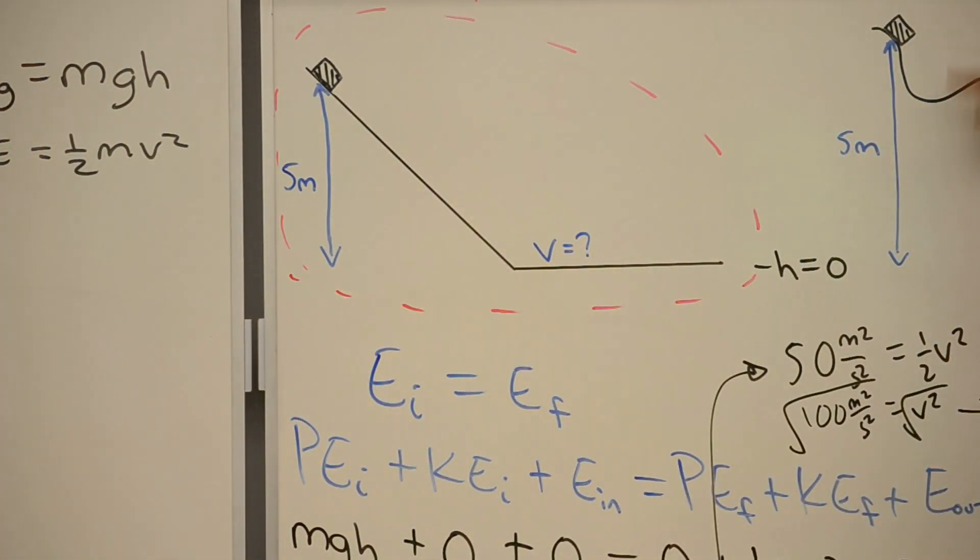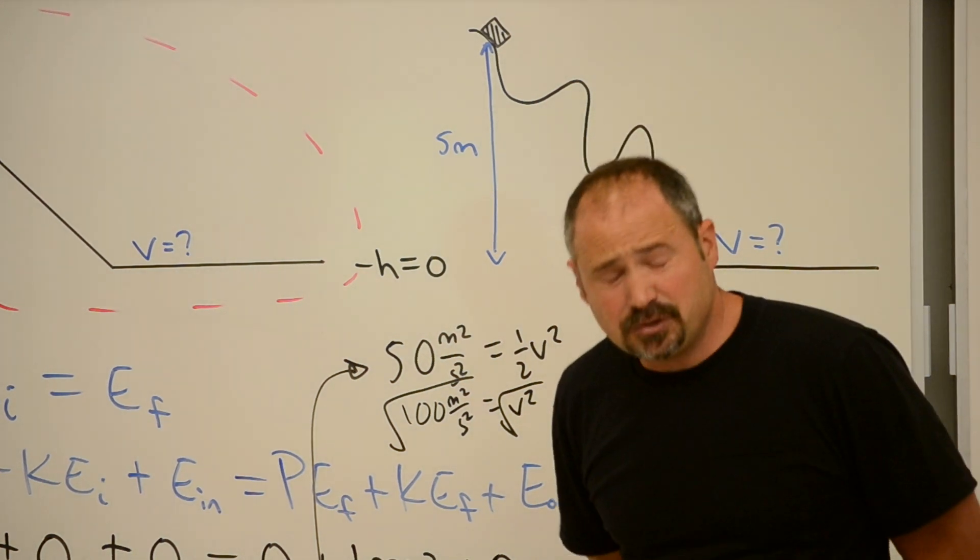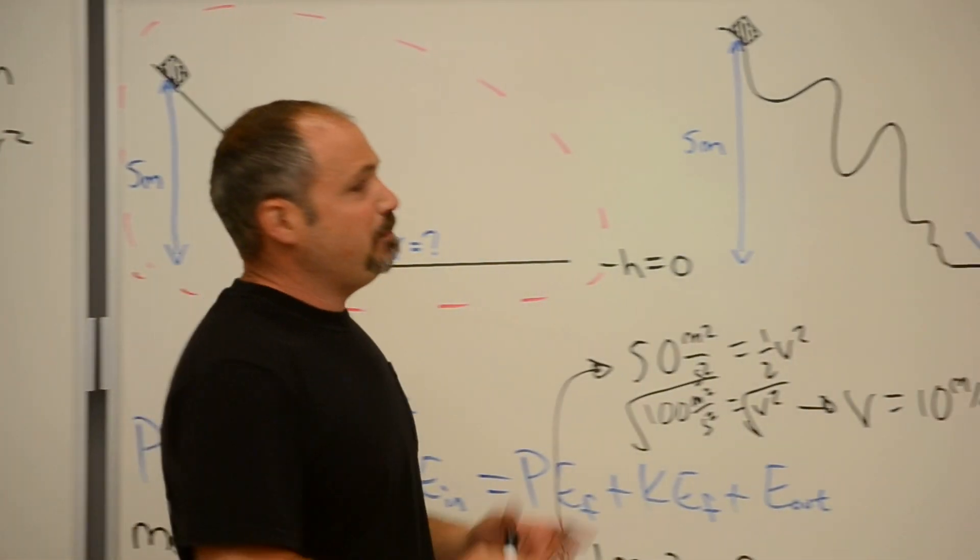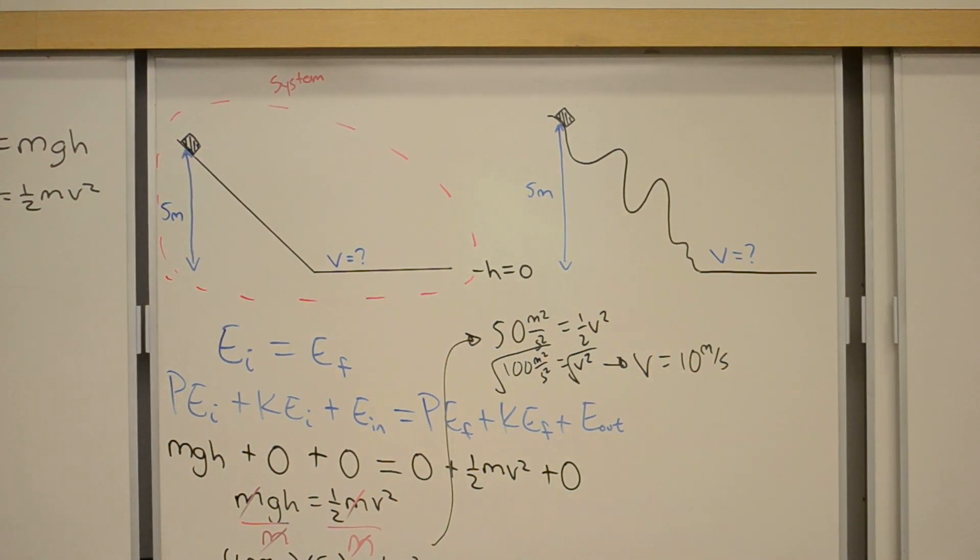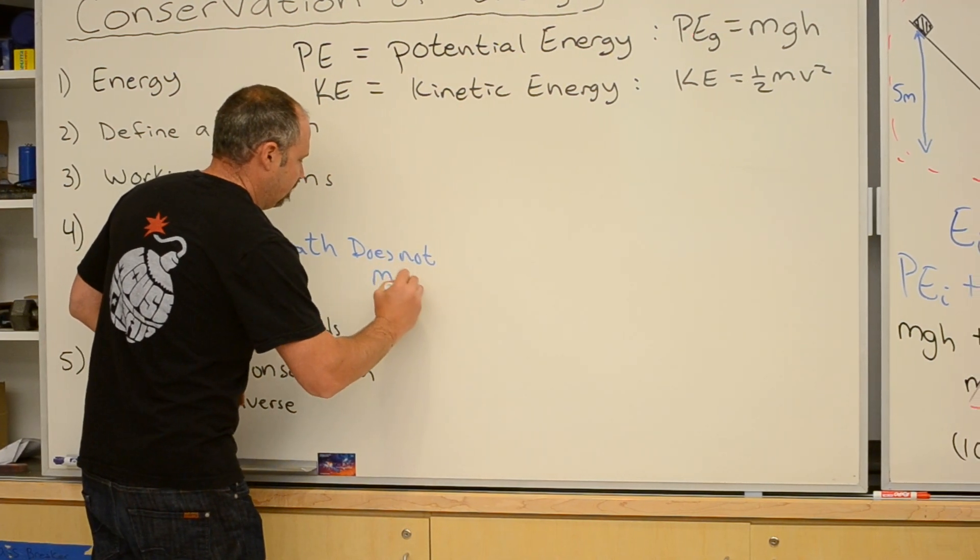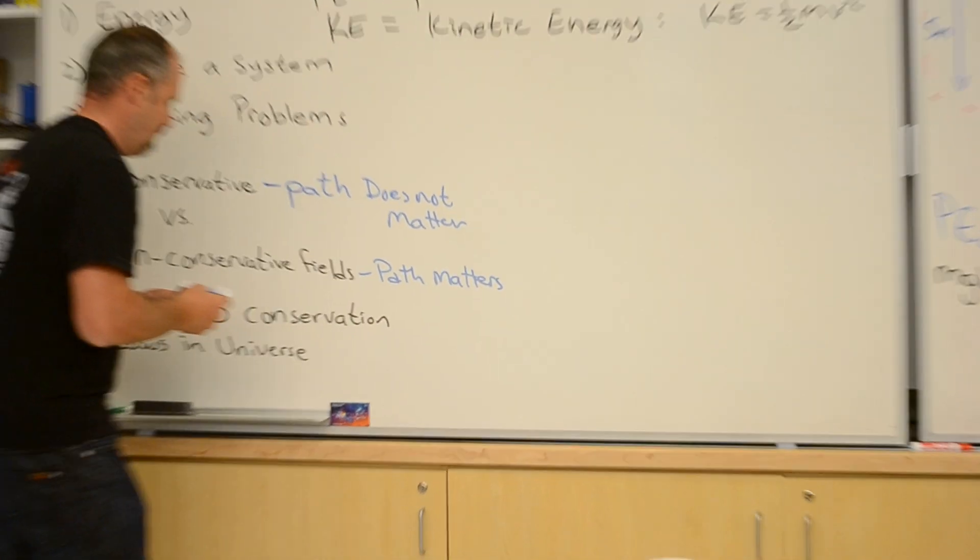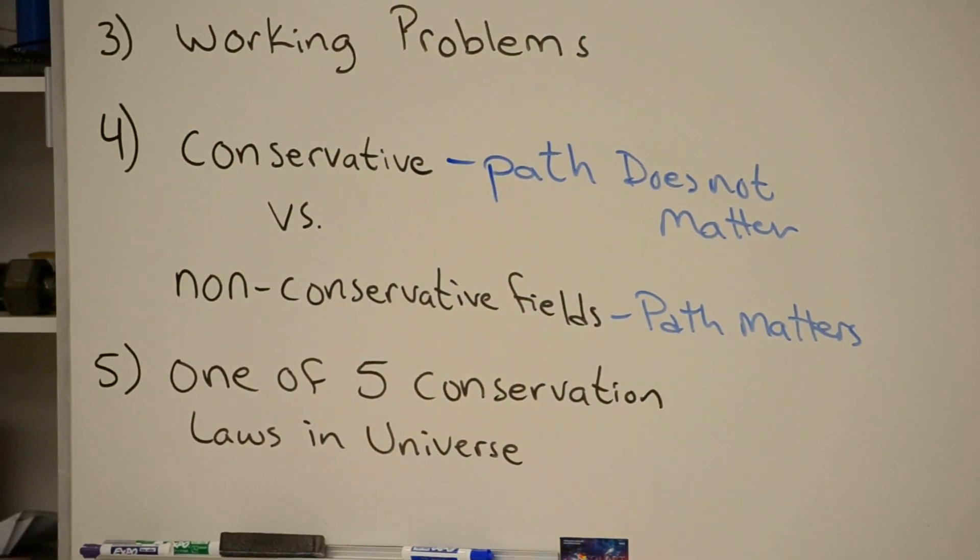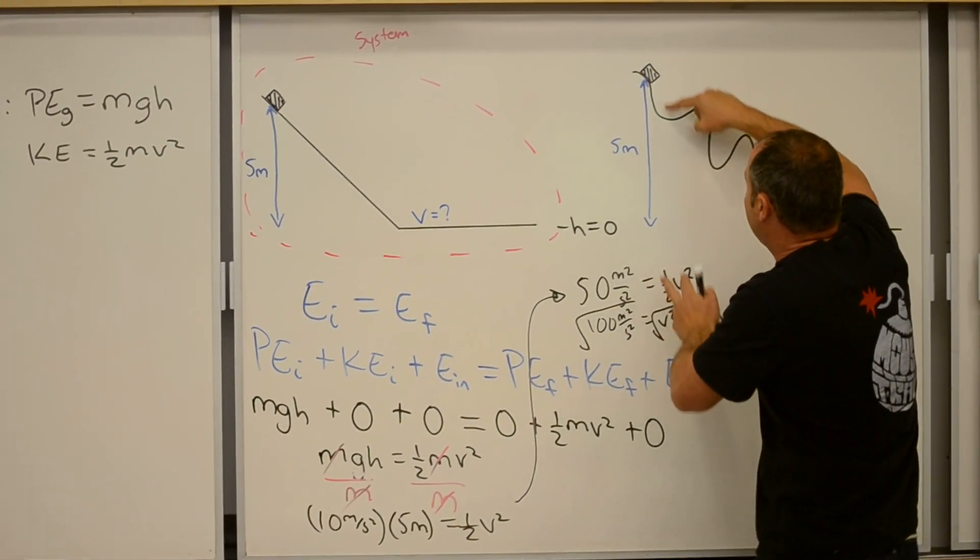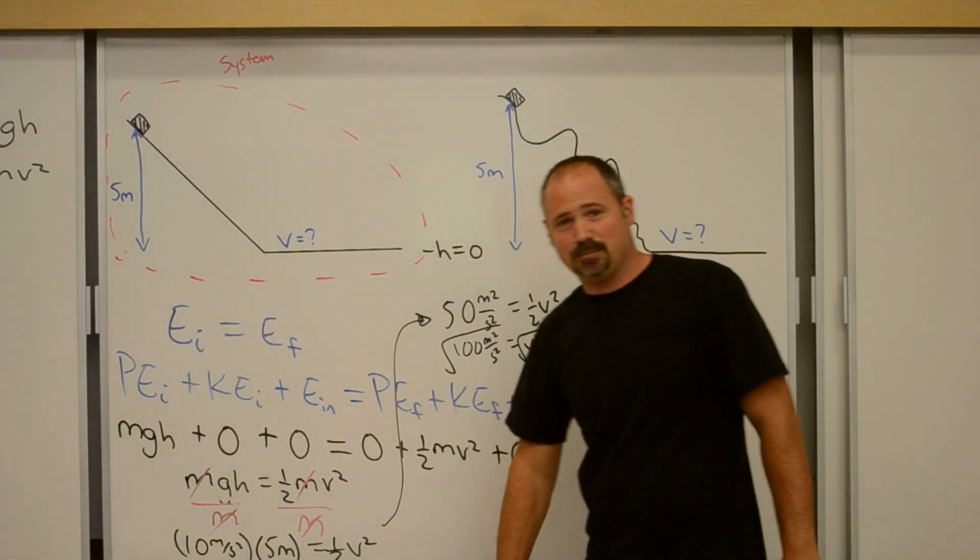What about if I have this kind of situation? The potential energy of gravity is what's called a conservative field. So gravity is a conservative field. Therefore the path does not matter. And that's the difference here - path does not matter. Because for the formula for gravity, it's mgh. All I care about is the height. I don't care about the distance it has to travel. It's a conservative field. I will get the exact same answer here that I get there, 10 meters per second.